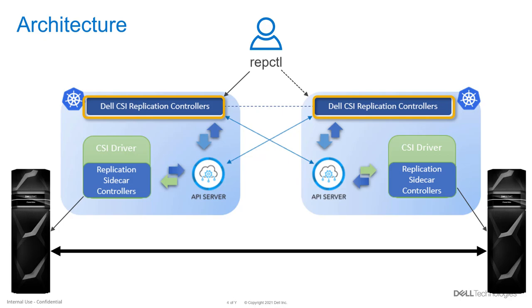The second piece of the puzzle is the sidecar. The sidecar is added to the existing CSI driver and will interpret requests from the replication controller as actual actions on the array side. For example, if we provision a volume with a synchronous replica in PowerStore, we create an object within the replication controller that translates into calls against the PowerStore.